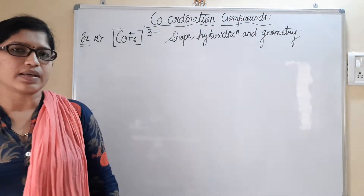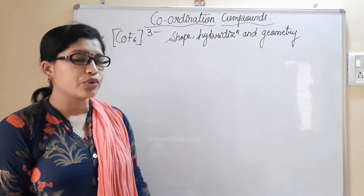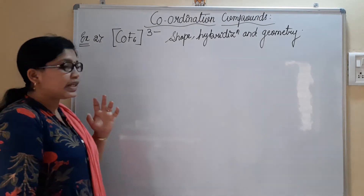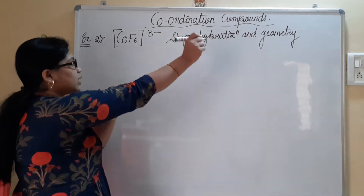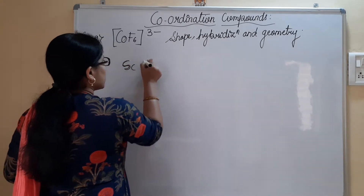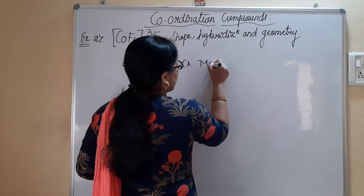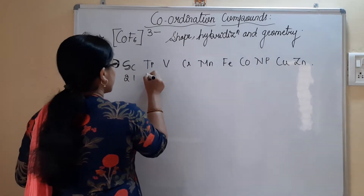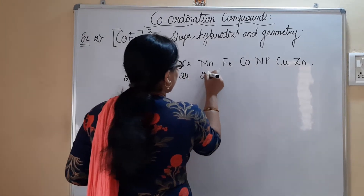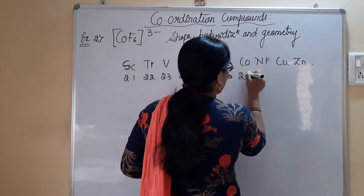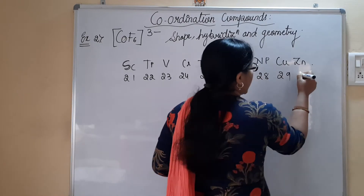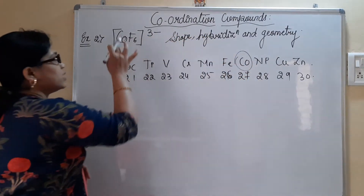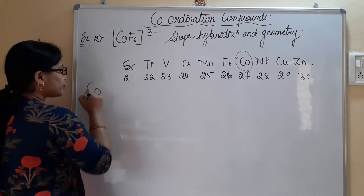Welcome back, students. Today let us work through the example of CoF6³⁻. This compound will be given to you and they will ask you to find the shape, hybridization, and geometry of this molecule. All the 3d series elements must be known. The 3d series starts from scandium (21) through titanium, vanadium, chromium, manganese, iron, cobalt (27), nickel, copper, and zinc (30). We are interested in cobalt as it is the transition metal present here.